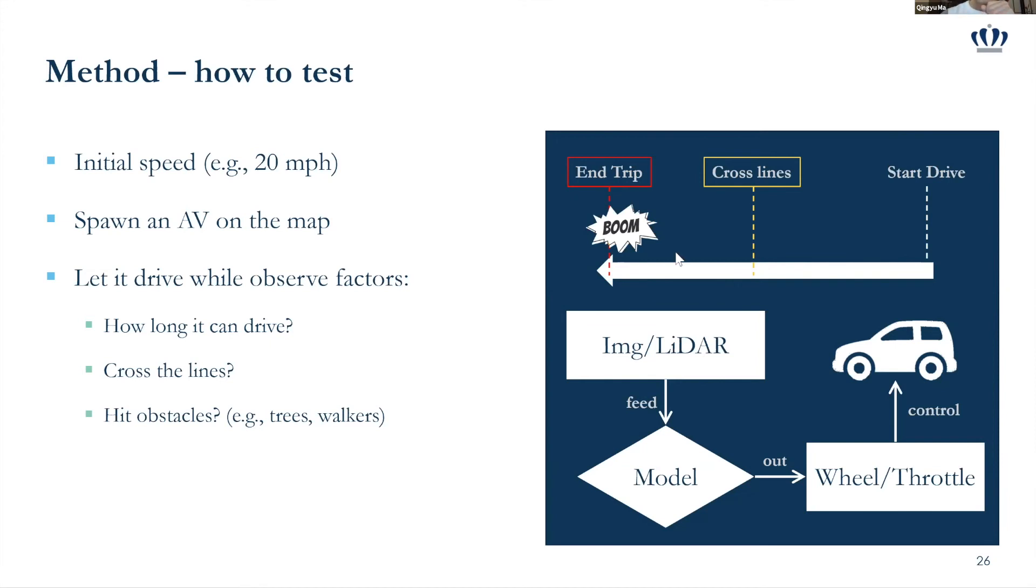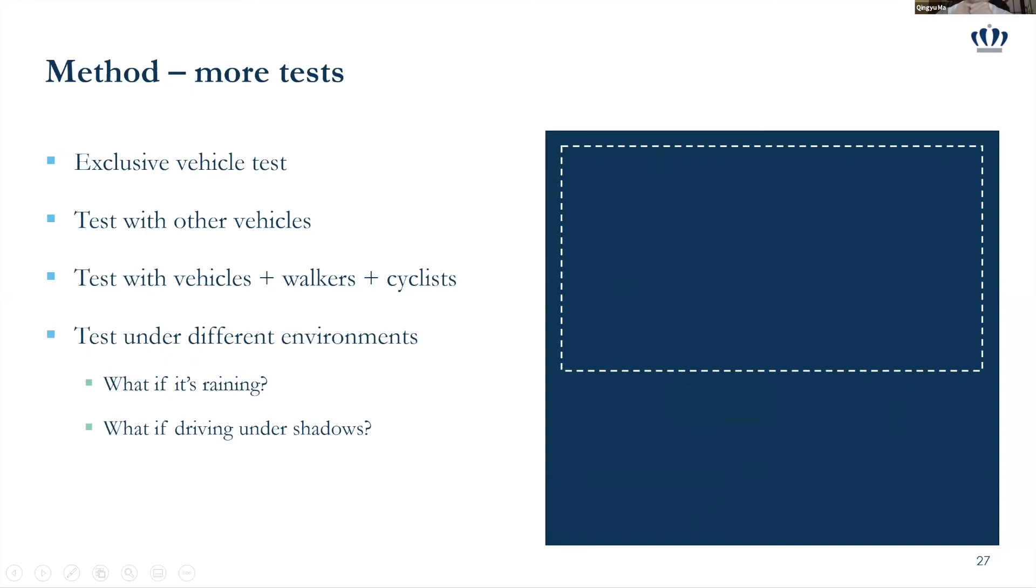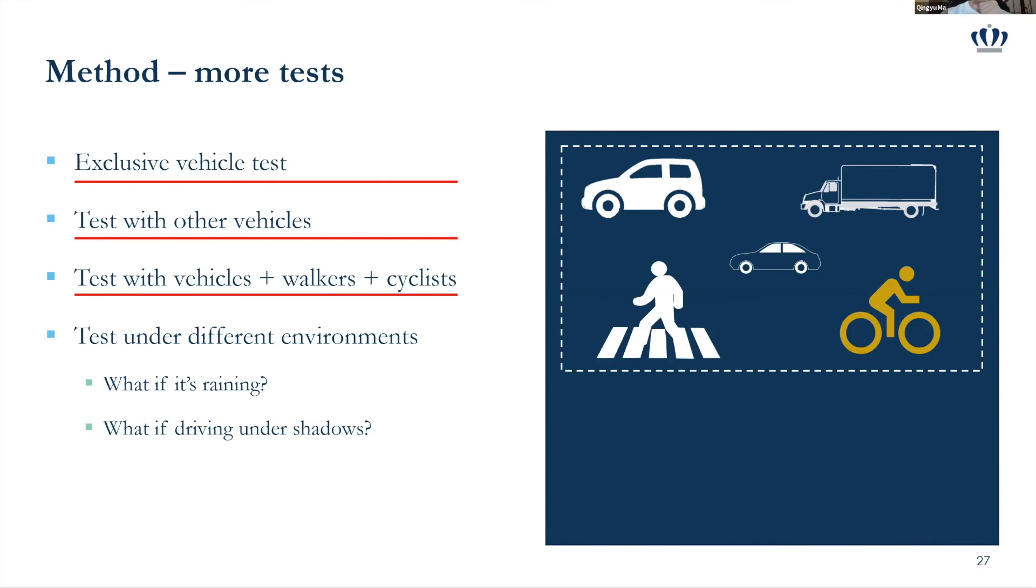So several factors are observed and tracked such as the length or how long it's going to take and how many times it crossed the lines or what kind of obstacles it hits such as trees or hit a walker. And there can be more tests to be designed and to be done such as the exclusive vehicle test that's only run the autonomous vehicle in the virtual environment and there's nothing else. Or you can also add some vehicles running together with you. You can also add some pedestrians or cyclists to the environment. And also this framework can be tested on a different environment. What if it's raining or what if driving under shadows, because sometimes the sunlight may have different direction and the shadows really affect on the image part.